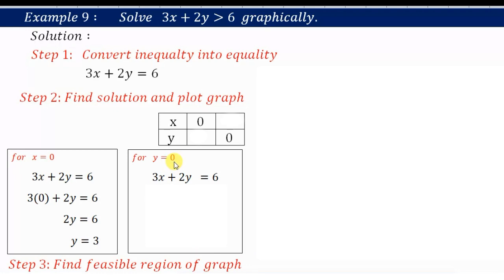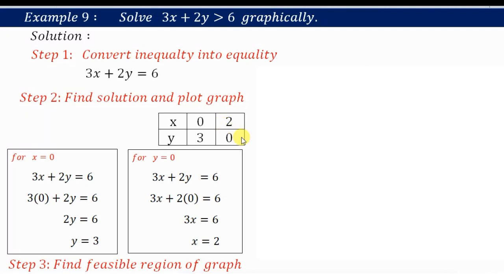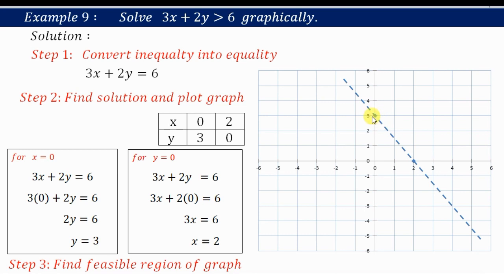Now for y equals 0, putting y equals 0, that term becomes 0 and 3x equals 6, so x equals 2. For y equals 0, x equals 2. These are the two points. On the graph, the point (0, 3) and the point (2, 0) are plotted and joined with a line.